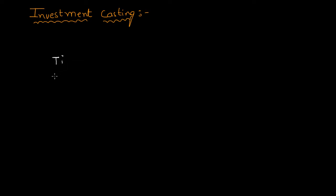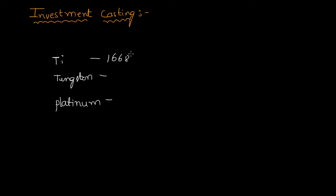The first material is titanium, the second one is tungsten, and the third material is platinum. The melting point temperatures are: titanium is 1668 degrees Celsius, tungsten is 3422 degrees Celsius, and platinum is 1768 degrees Celsius. Now you choose the best casting method to cast these materials.